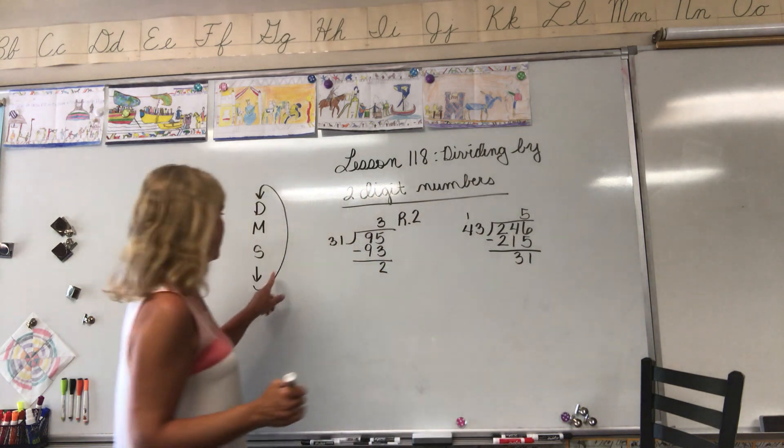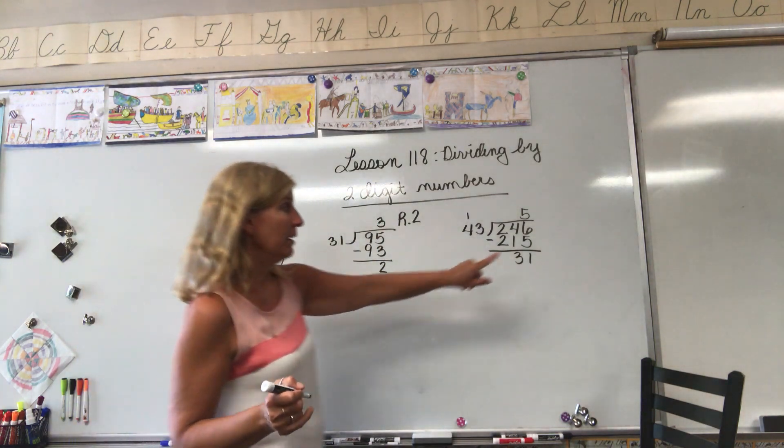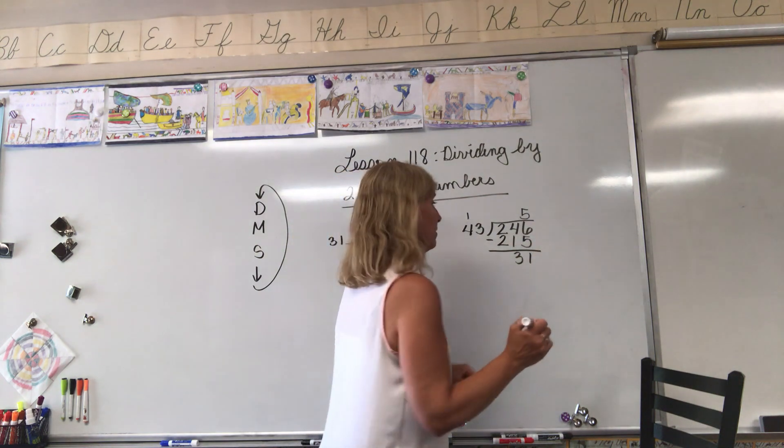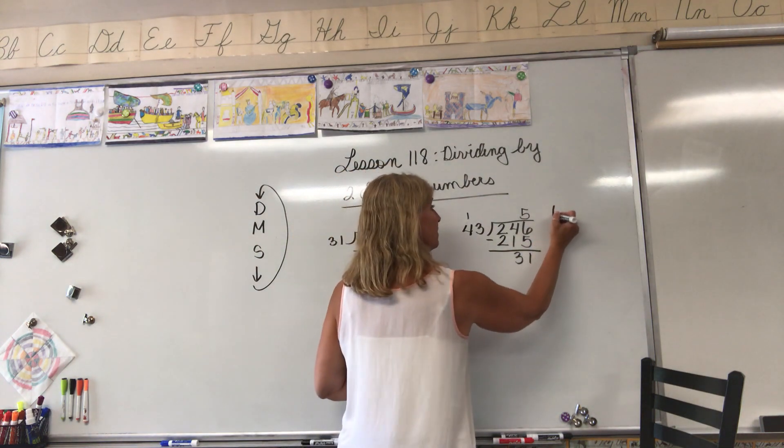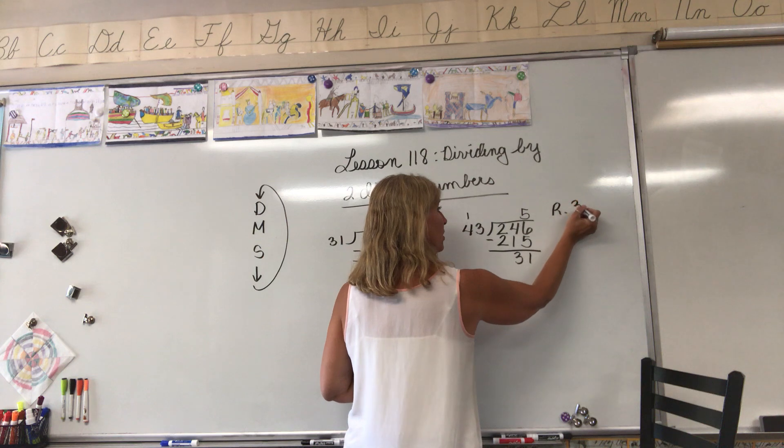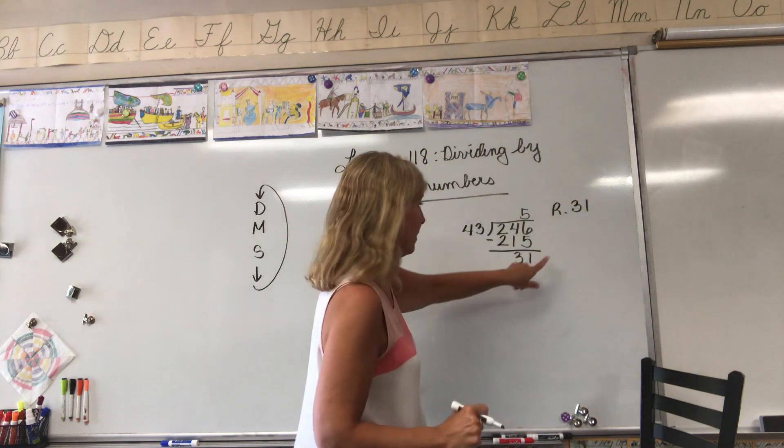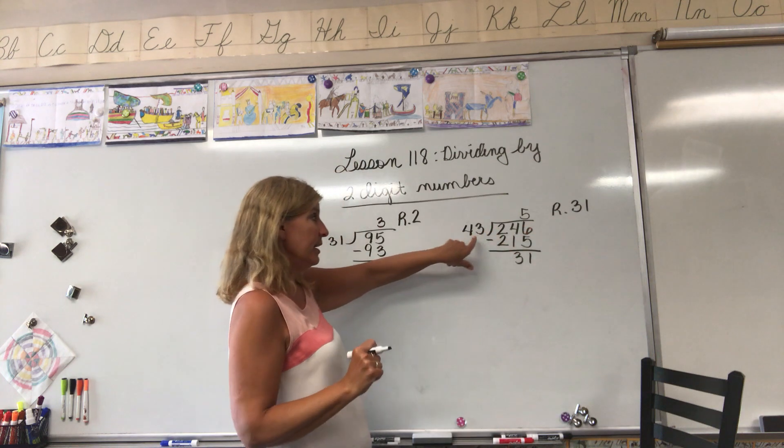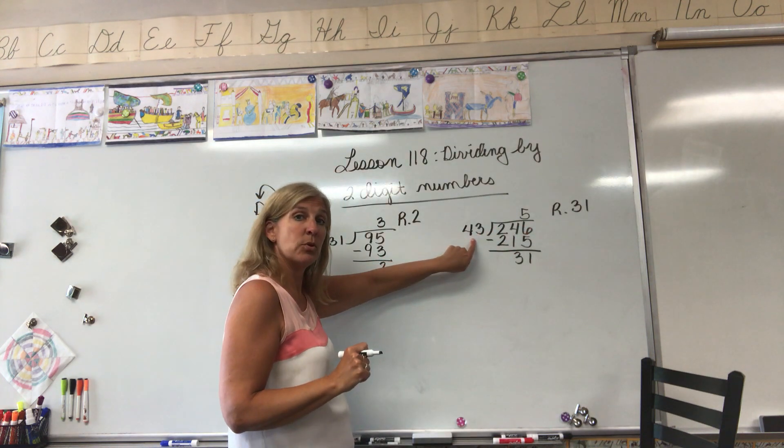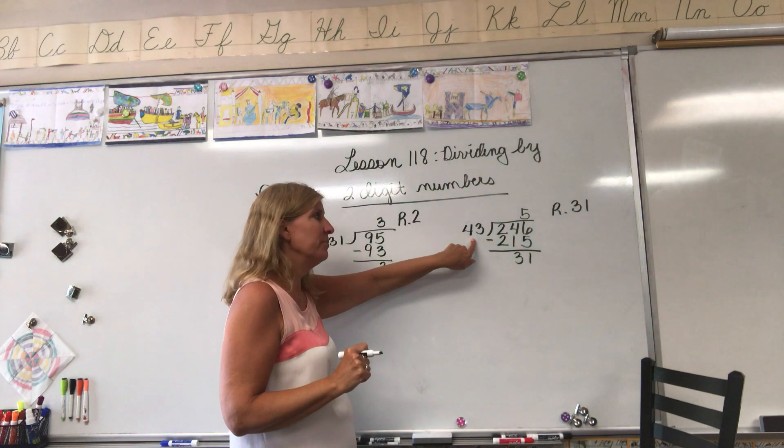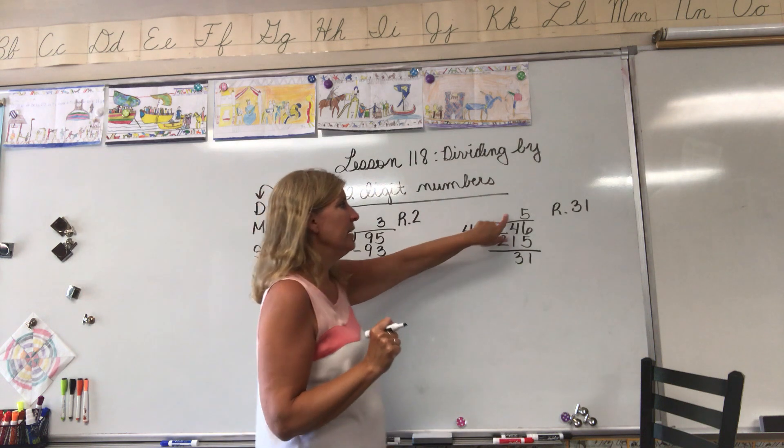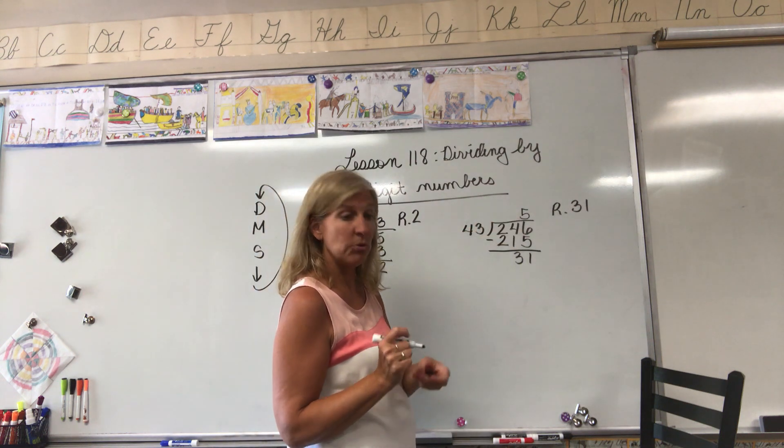Our next step is bring down. There's nothing else to bring down. Our answer is 5 with the remainder of 31. Now that remainder is pretty big. I need to make sure it's not too big. Is my remainder bigger than the number we're dividing by? No. My remainder is okay. The answer is 5 with the remainder of 31.